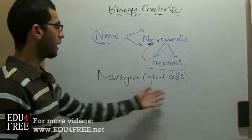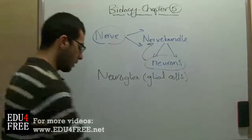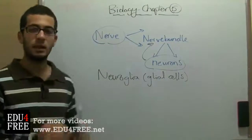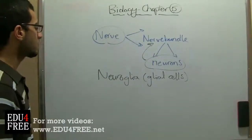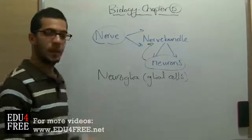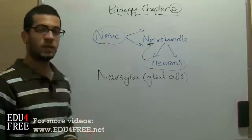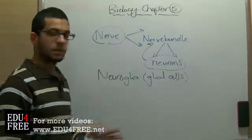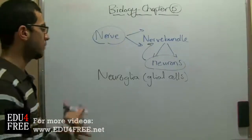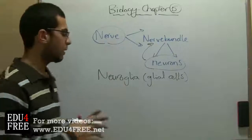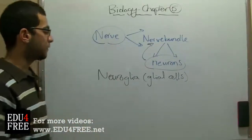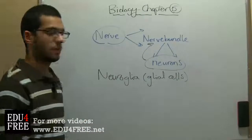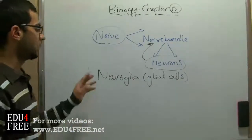So neuroglia or glial cells have some functions. First it acts as a connective tissue between the neurons. Second it acts as an insulator between the neurons, so that each neuron can be independent in the message of transporting the nerve impulses. Third they act as a nutritive tissue, so that they provide the neurons with essential food substances. And finally they have an important role in repairing the damaged tissues of the neurons.